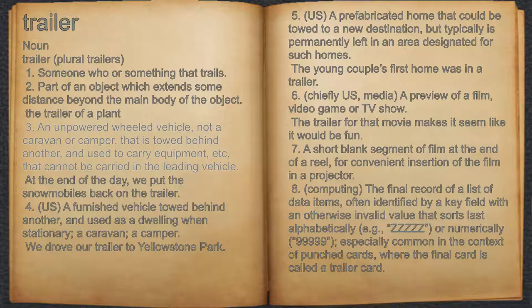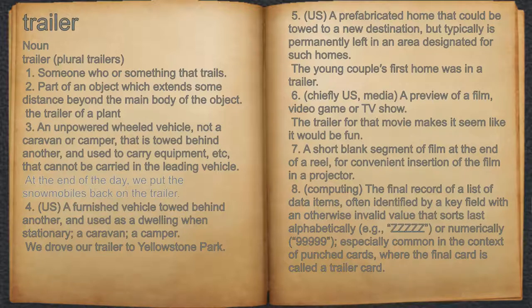3. An unpowered wheeled vehicle, not a caravan or camper, that is towed behind another, and used to carry equipment, etc., that cannot be carried in the leading vehicle. For example, at the end of the day, we put the snowmobiles back on the trailer.